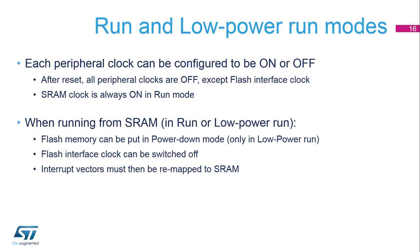Each peripheral clock can be configured to be on or off in run and low-power run modes. By default, all peripheral clocks are off except the flash interface clock. The SRAM clock is always on in run mode. When running from SRAM in run or low-power run modes, the flash memory can be put in power-down mode by software and the flash clock can be switched off. The flash memory must not be accessed when switched off; consequently, interrupt vectors must be mapped in SRAM using the Cortex-M0+ Vector Table Offset Register.